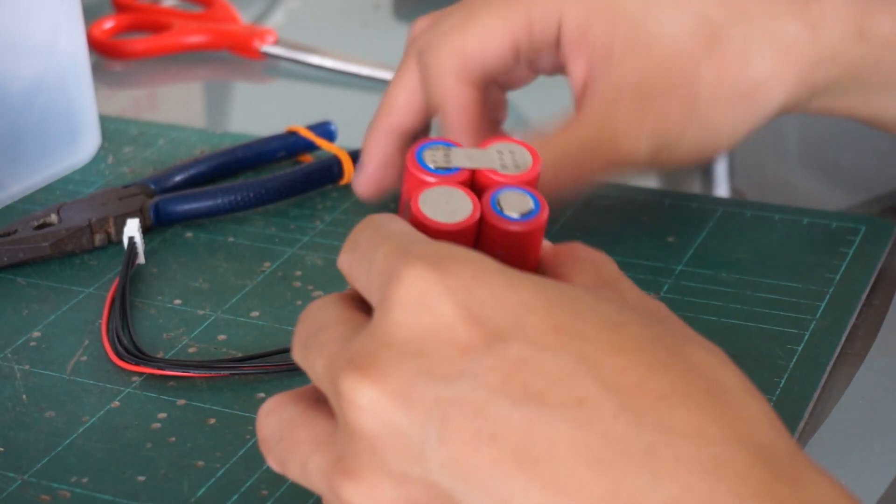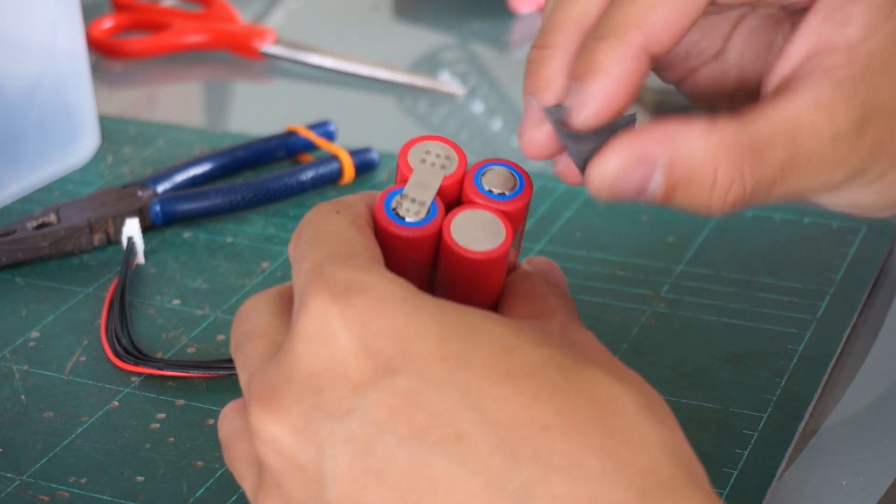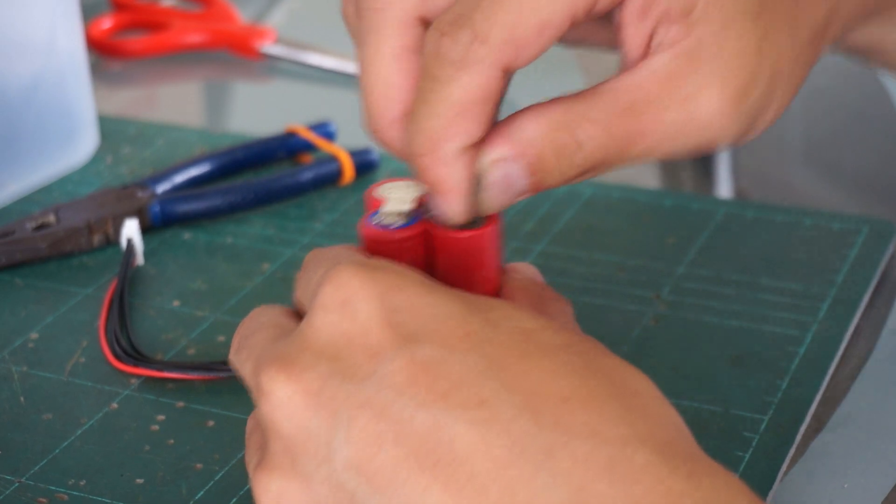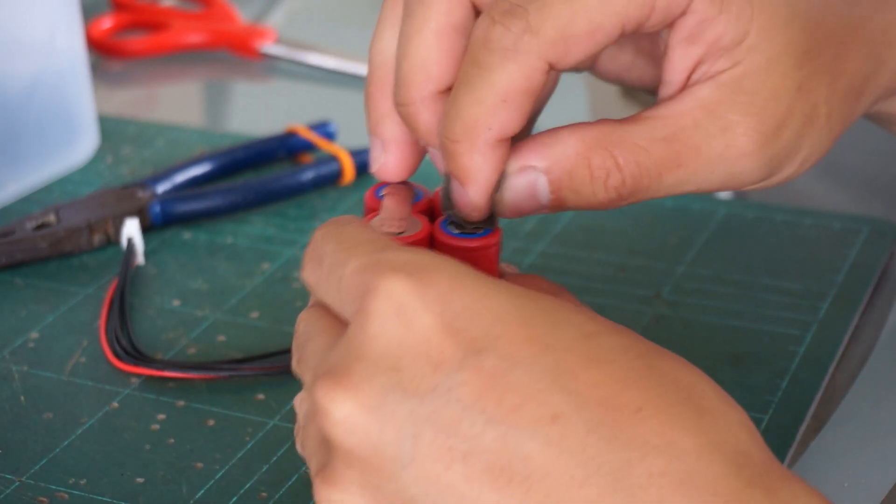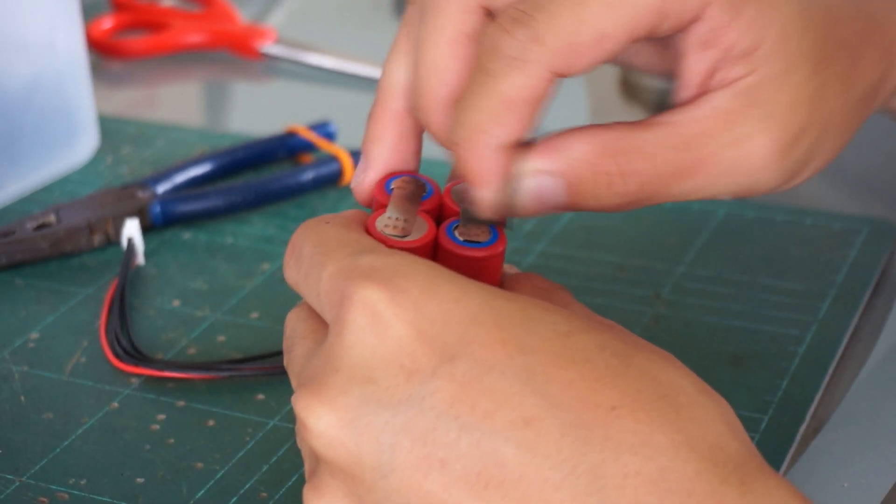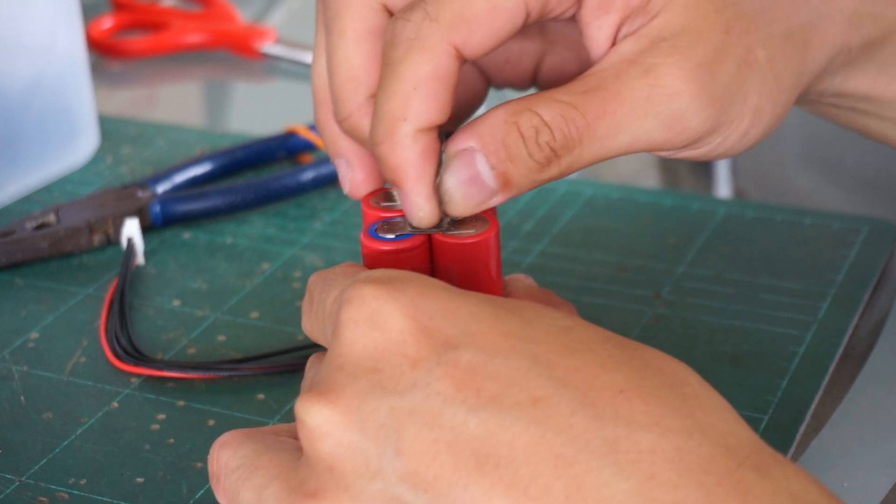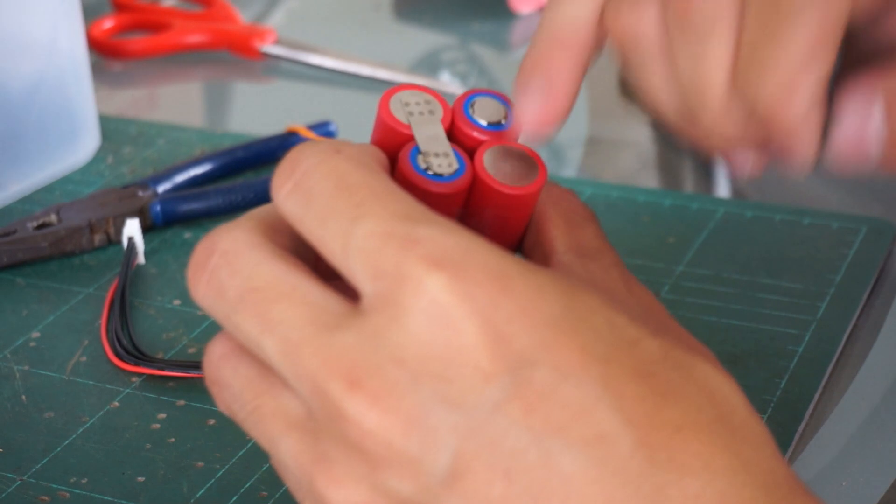This is a very crucial step. If you don't do this, you'll have a hard time soldering the solder to the surface of the nickel plate as well as the battery terminals.